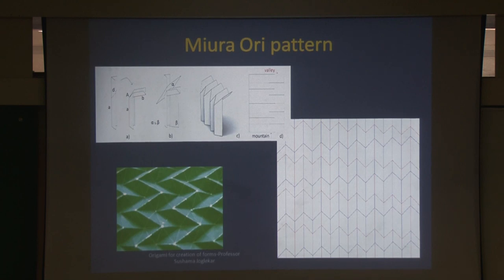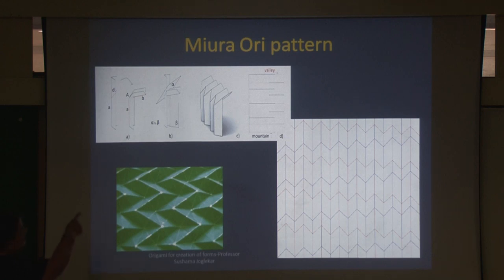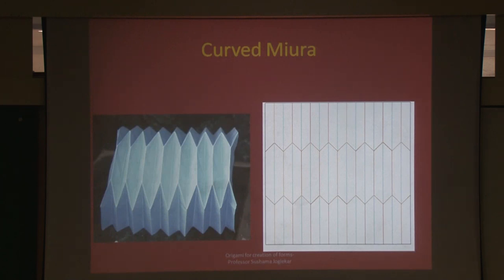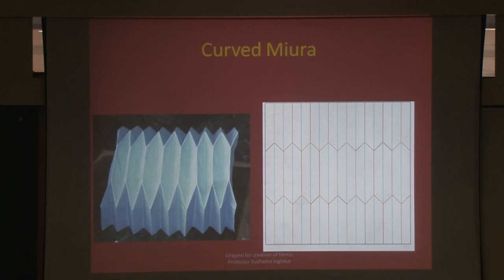Vira ori is reverse folding. You can see the folding pattern: various valleys and mountains meeting at one point — that is the folding pattern. It is a foldable pattern because you can push it on one side and collapse it — it is a collapsible structure. The moment you change the direction, it can become a curve. It was lying flat, but if I change the direction of those mountains and reverse the side, it can become a curve.